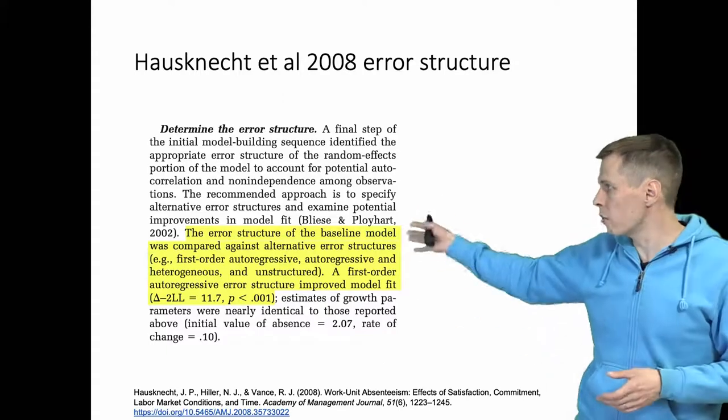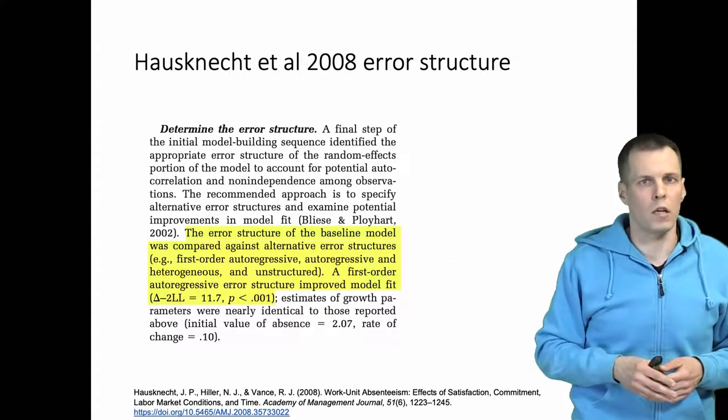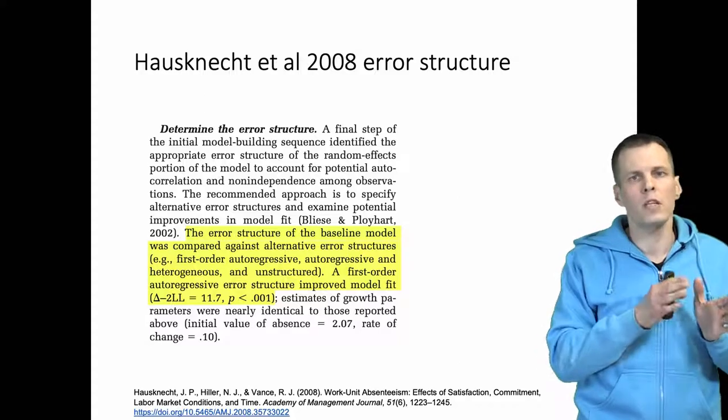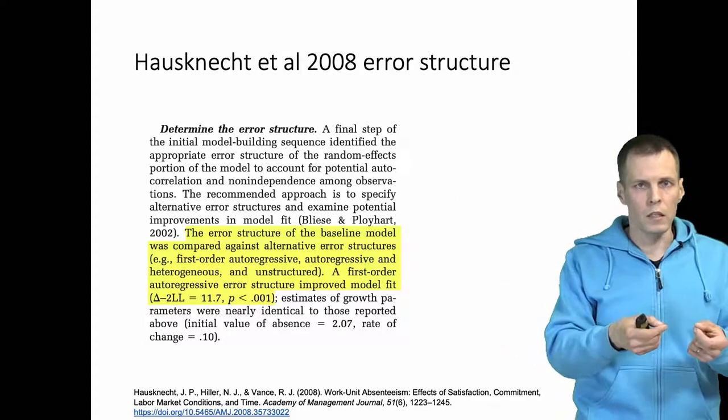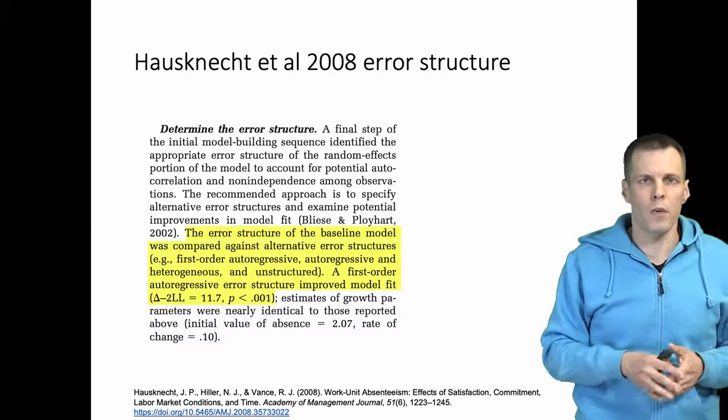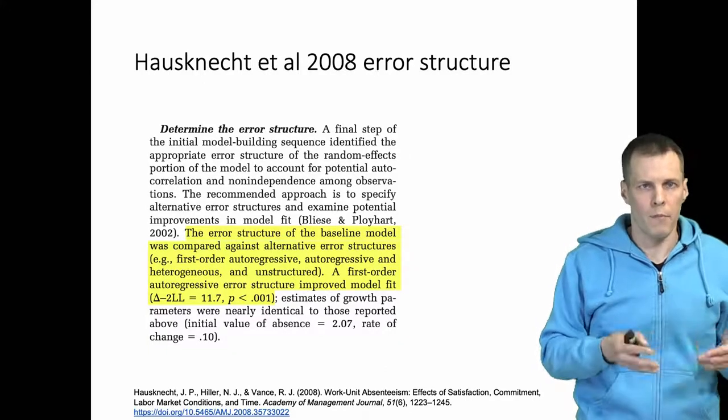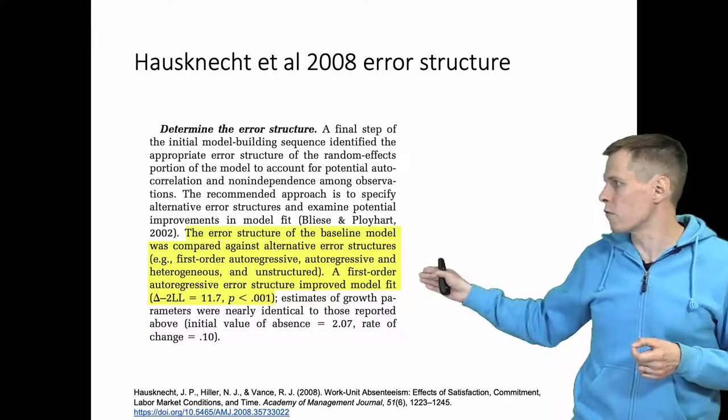Maybe you have some other weird structure in correlations. So you consider which of those correlation structures are appropriate for your data, and then you use all of them and you basically pick the one that fits the best based on the likelihood ratio test.